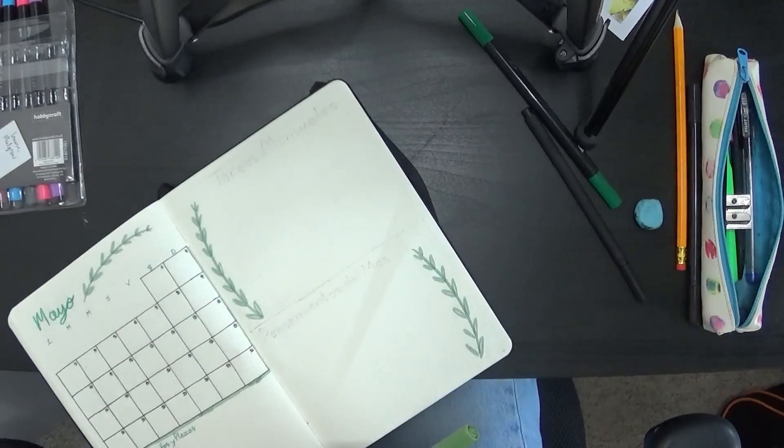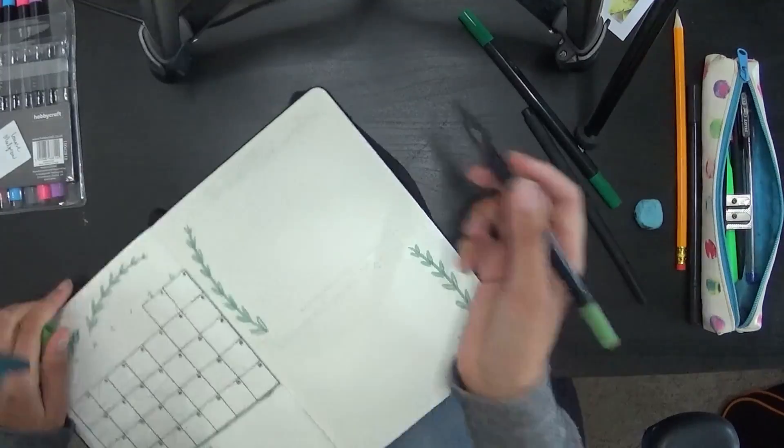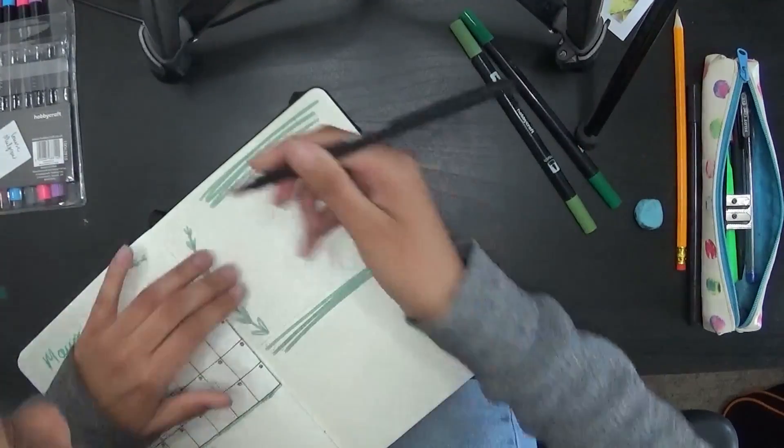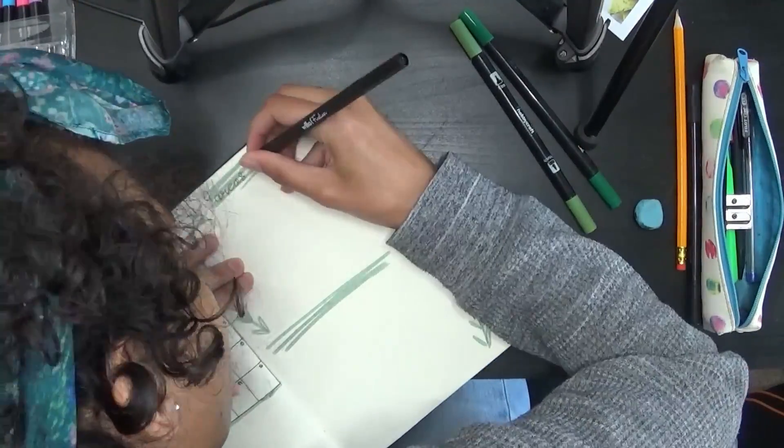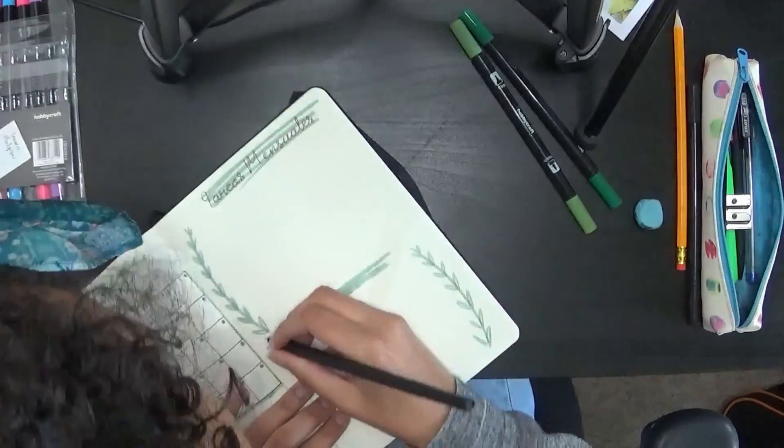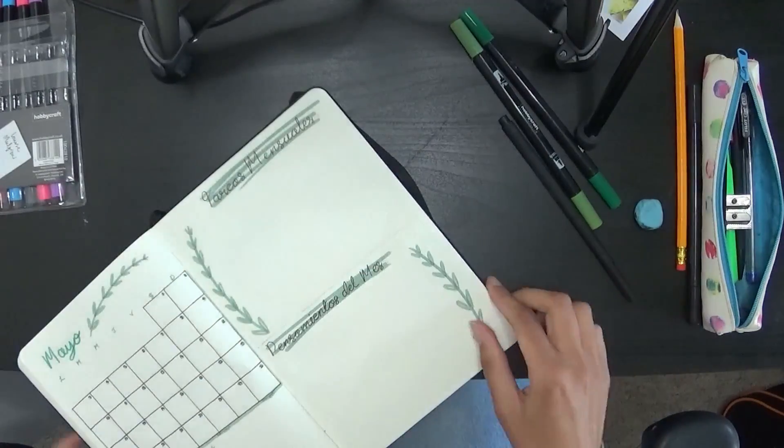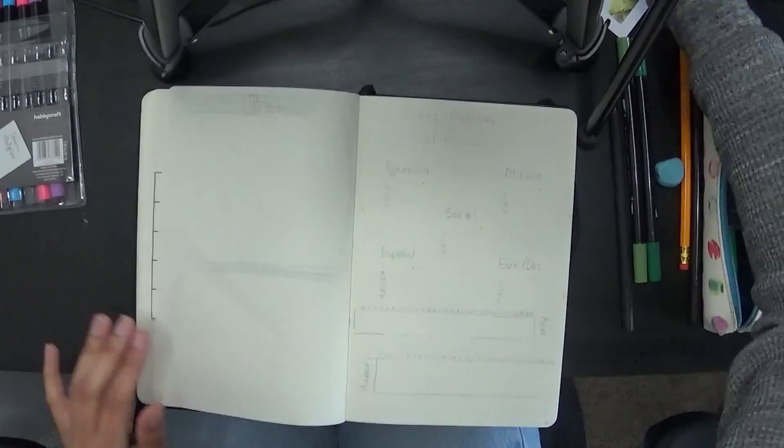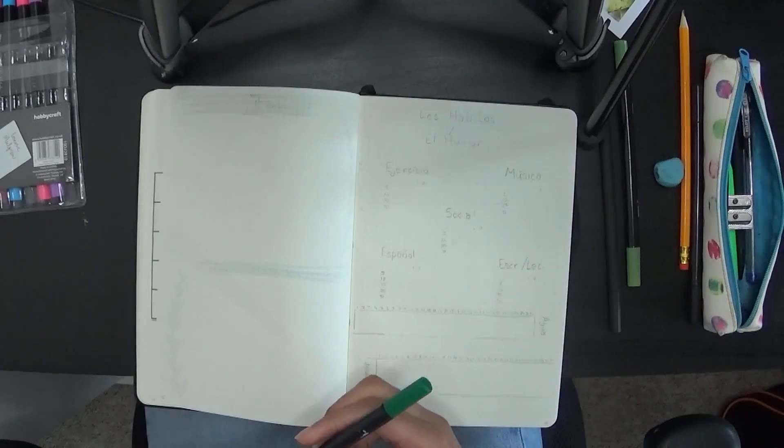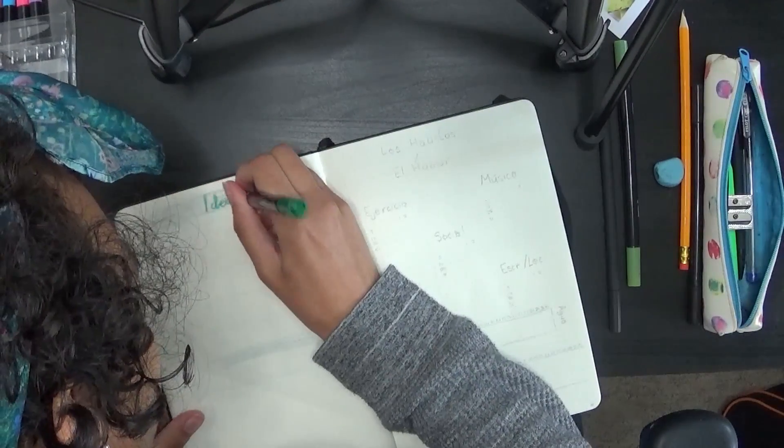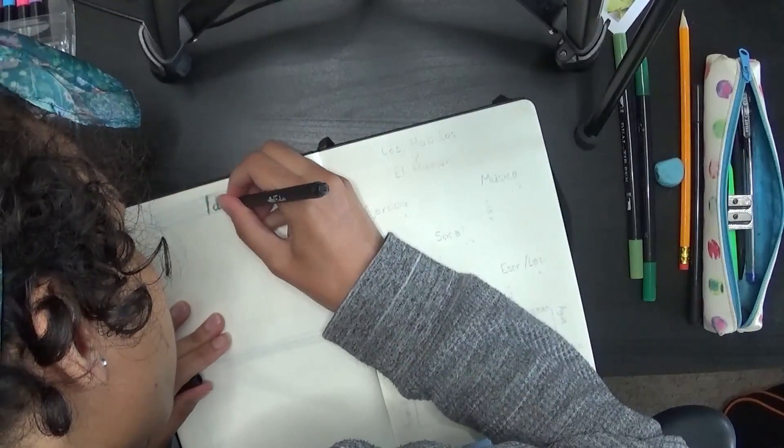Starting off with my monthly calendar layout and my monthly task list and thoughts of the month. These are all the same as they've been for this whole year at this point, so not much changing there. Next we're moving on to my ideas page, still one of my favorite pages to set up because it is so simple.